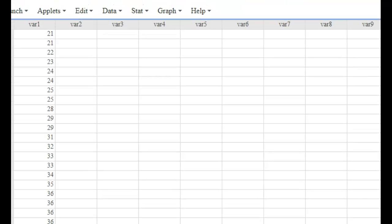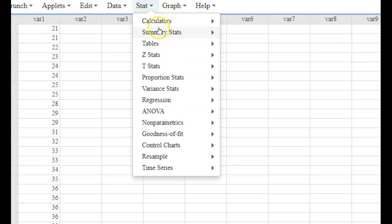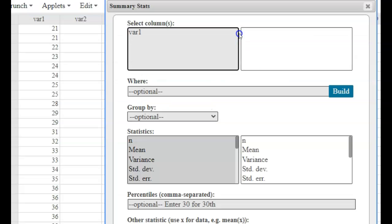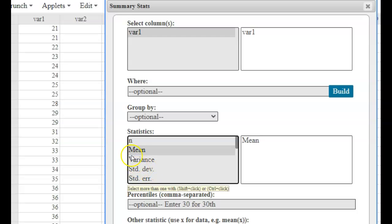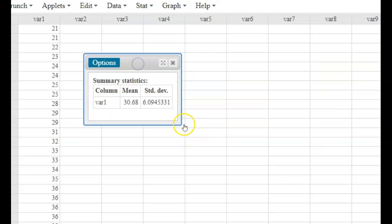All right, so we want to find the mean and standard deviation. You go to stats and summary stats and columns. You're going to click on var 1 because that's where our data is and here you're going to choose which ones you want. So we want the mean and the standard STDEV. Hold the control button down or command if you're on a Mac, click STDEV and compute and then it gives you the summary.